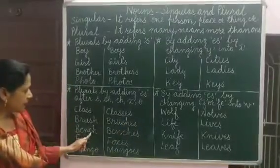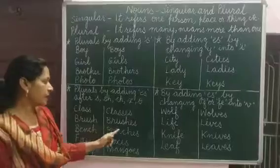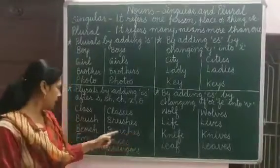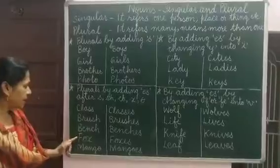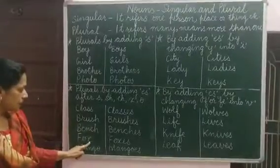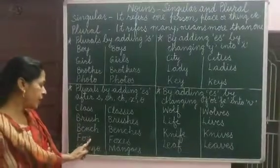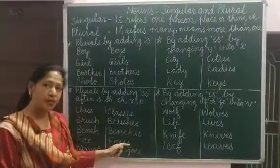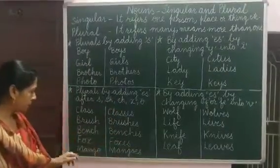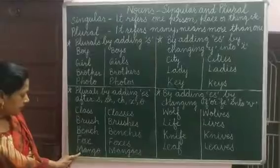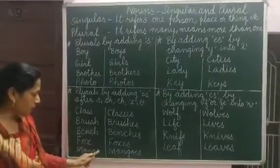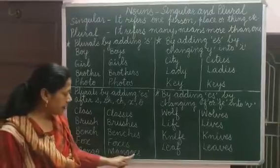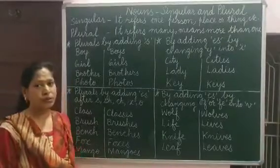Next is CH — again we add ES to make it a plural noun. Next is fox — it ends in X, and after X also we add ES to make it plural. And then mango — it ends in O, and we have to add ES with this word also.